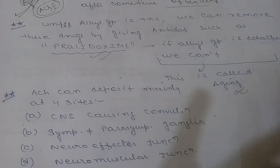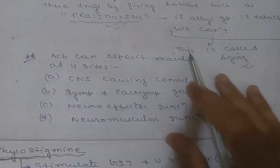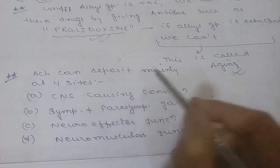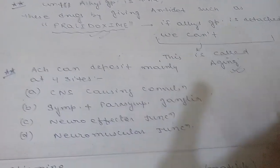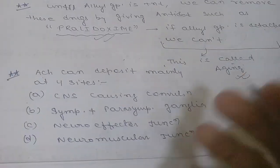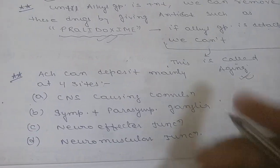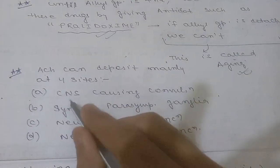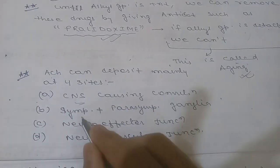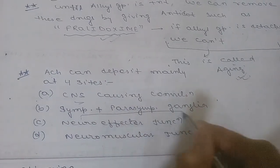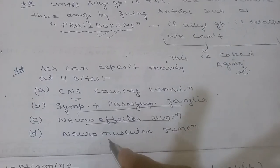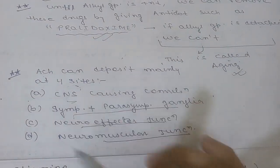Acetylcholine can deposit mainly at four sites: the CNS, sympathetic and parasympathetic ganglia, neuro-effector junctions, and neuromuscular junctions.